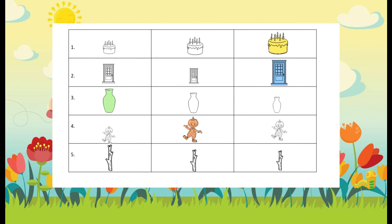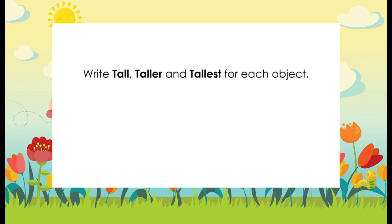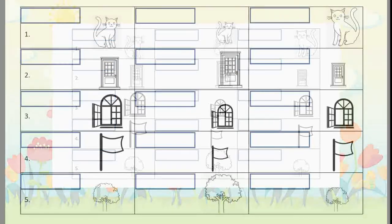Now this is the hardest — or the easiest — part for you. We're going to write tall, taller, and tallest for each object. We're going to identify three objects all together. Let's get started. On the last page of the height session, you're going to see a picture of cats.